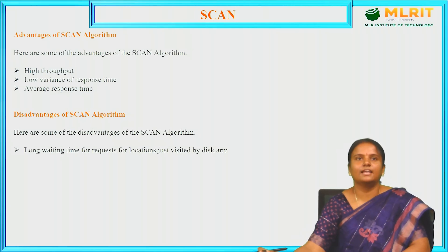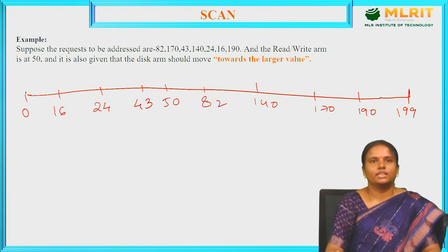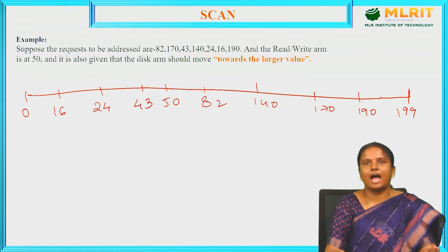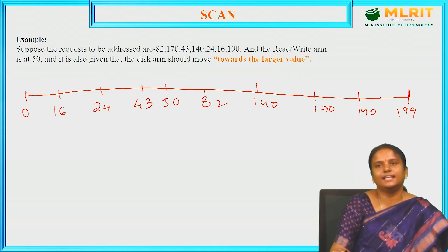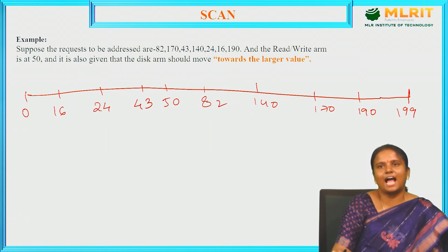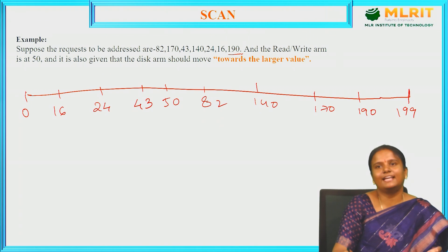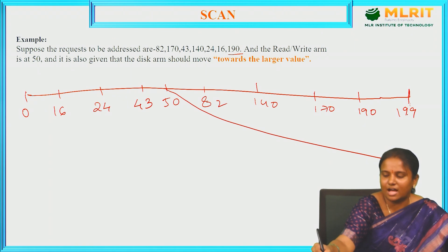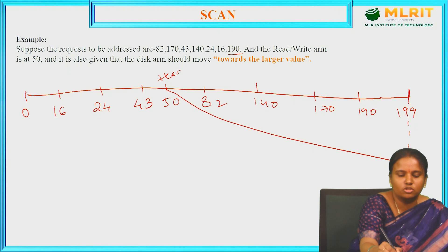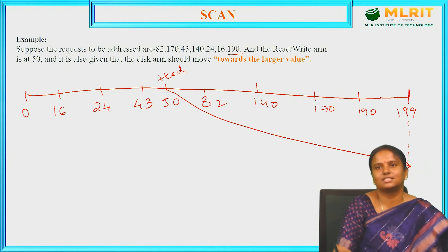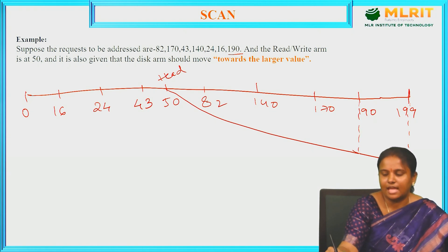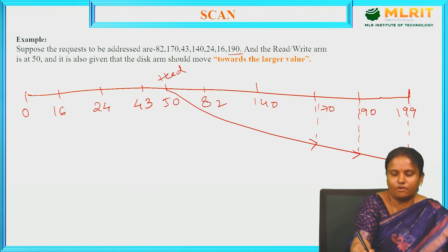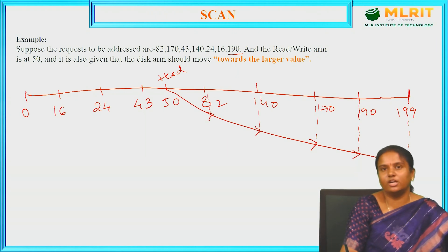In SCAN, the disk arm moves towards the larger value first. Since the algorithm performs like an elevator, it moves directly to the largest disk arm position, which is 199. From 199, it services: 190, 170, 140, 82, going towards the shorter values, then 60, 43, and 24.